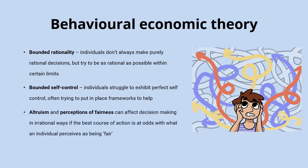Another idea is altruism and perceptions of fairness, which can affect decision making in irrational ways if the best course of action is at odds with what people perceive as being fair. Many people will refuse to buy something if they think they're being ripped off, even if it is a utility-maximising purchase.